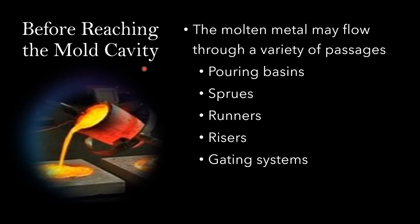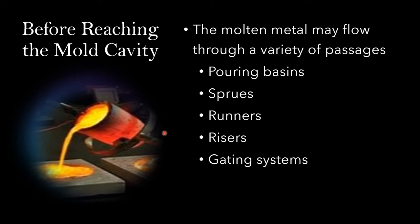Before reaching the mold cavity — which is just the shape we're giving the molten metal — the molten metal flows through a variety of passages: the pouring basin, sprue, channels, runners, risers, and the gating system. All of these have to do with flow, and that flow speed is very important. The way the metal flows isn't easy — it takes years of experience and skill to handle, whether you use a machine or automation.